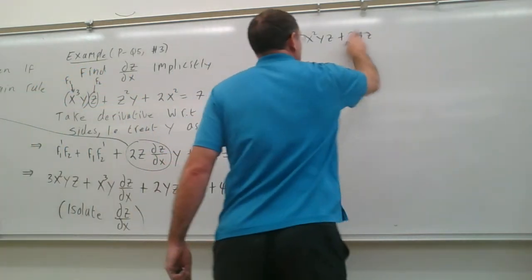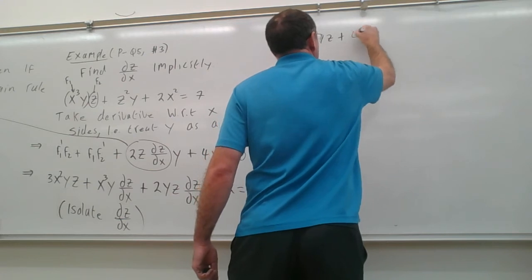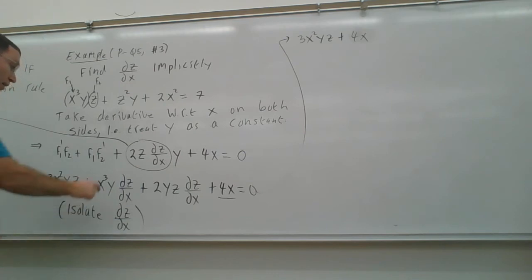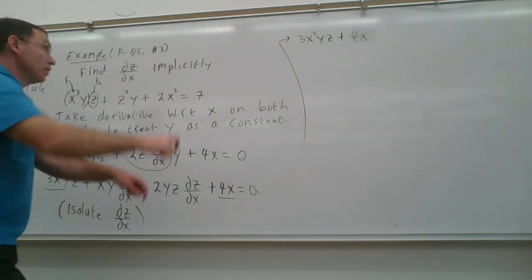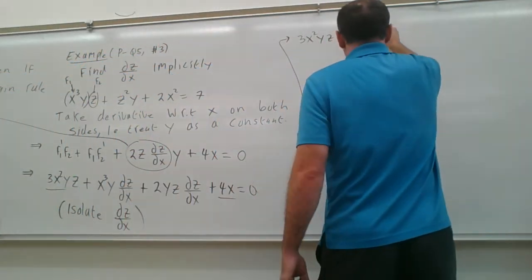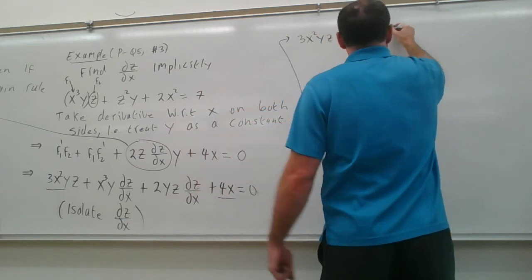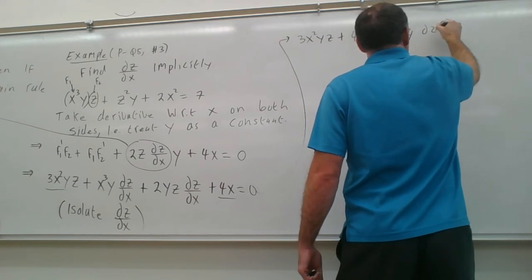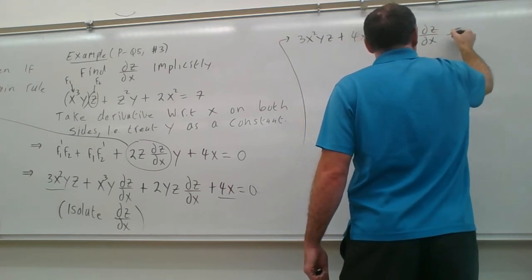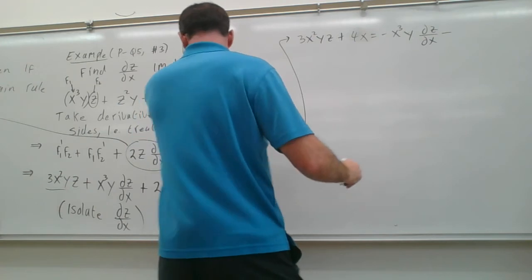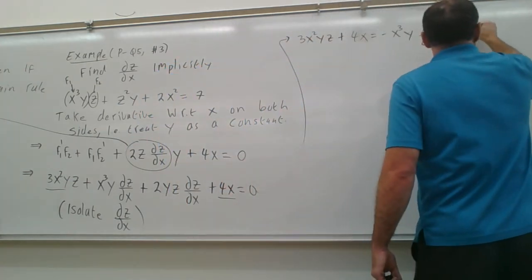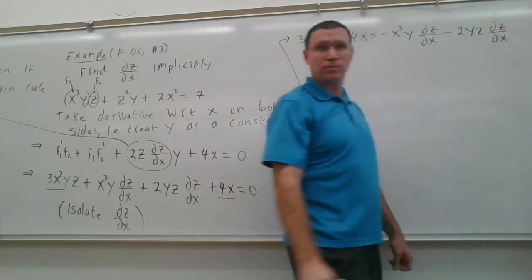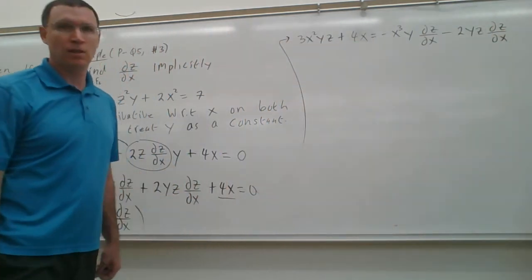So I'm getting all the ones that don't have partial z with respect to x. The rest I'll bring across the equal sign. So it'll be then equals minus x³y partial z with respect to x minus 2yz partial z with respect to x.